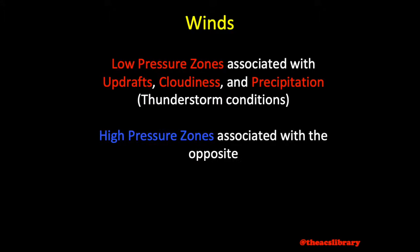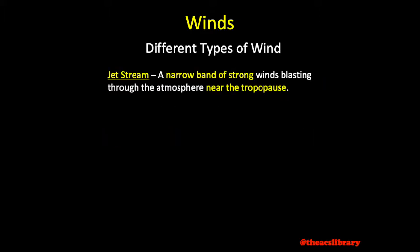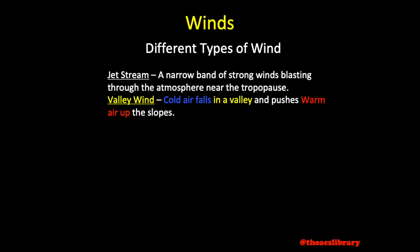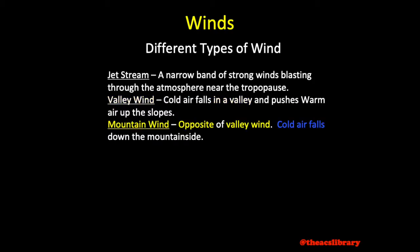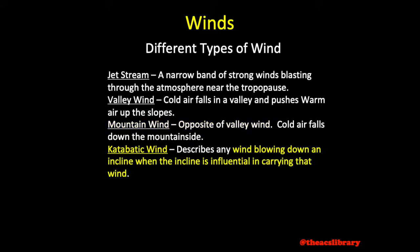Now that we understand how wind forms and acts, we must discuss the different types of wind. The jet stream is a narrow band of strong winds blasting through the atmosphere at a level near the tropopause. Valley winds form in valleys as the air near the surface cools, falling into the valley and pushing the warmer air up the slopes. Mountain winds are the opposite — as the surface of a mountain cools, the cold air cascades down the mountain face like a waterfall. Katabatic wind describes any wind being carried down a slope as a result of the incline; mountain winds fall under this category.